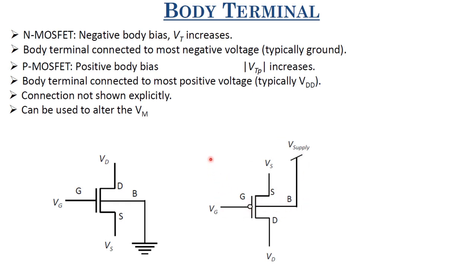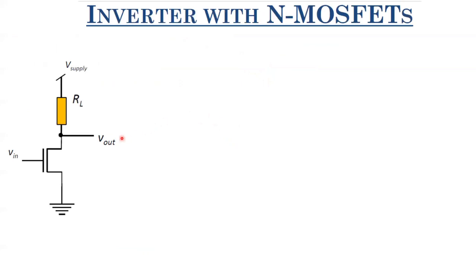That will be discussed when covering the CMOS inverter. Now with this discussion about MOSFETs as switches, let us go ahead and make inverters with N-MOSFET. We just replace the positive switch with an N-MOSFET, take the output at the drain, apply input at the gate, and ground the source. We still use a resistor here. Let us look at what exactly happens in this N-MOSFET inverter.